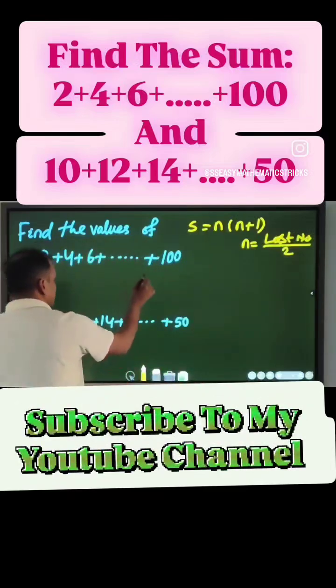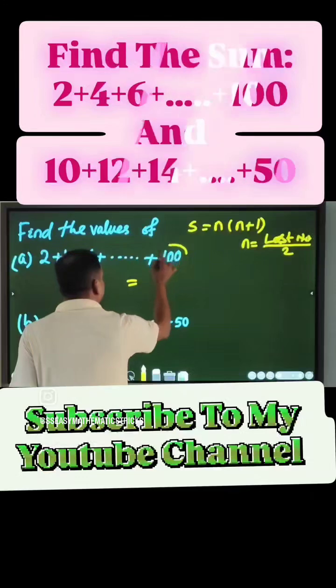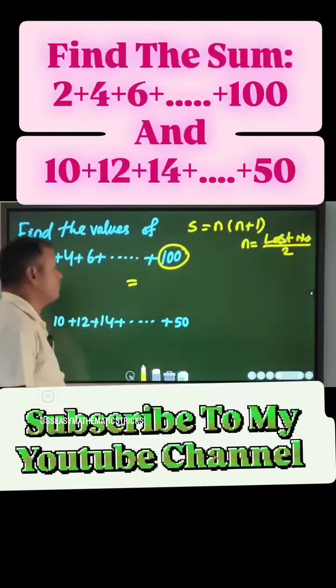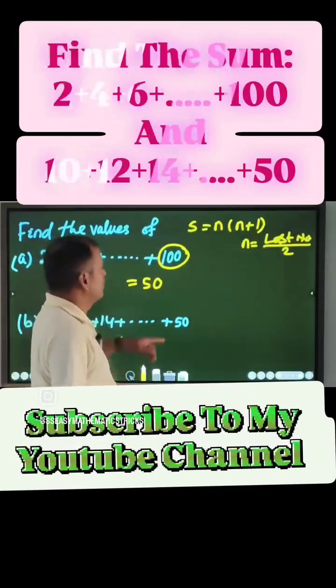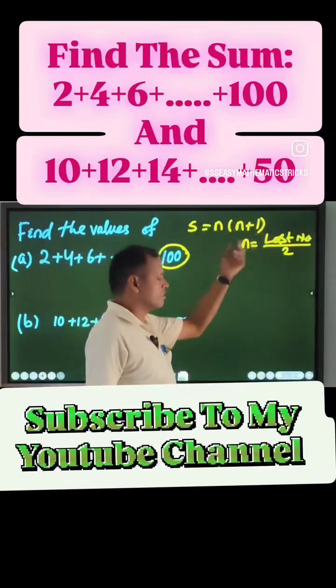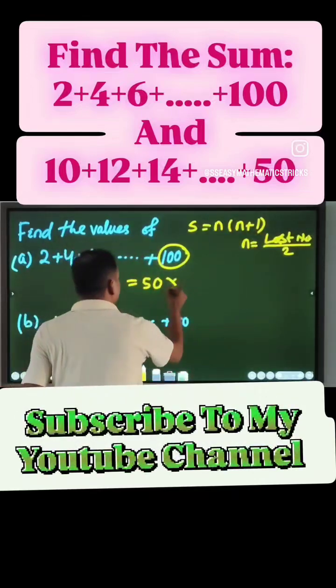So in this case last number is 100, its half is 50, n is 50. Then n plus 1 means its next number. That means we multiply 51.